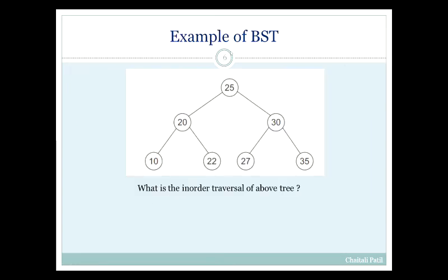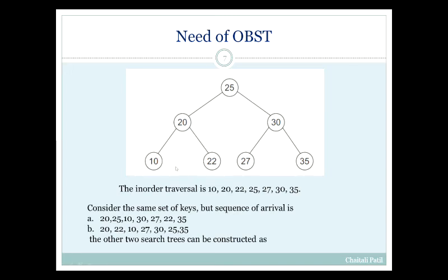Consider this simple example of BST. What is the inorder traversal of this BST? The inorder traversal of the BST is 10, 20, 22, 25, 27, 30, 35. The inorder traversal of BST is sorted in ascending order.